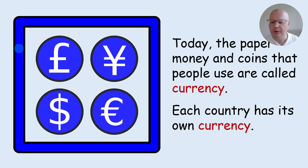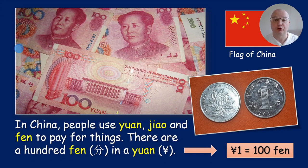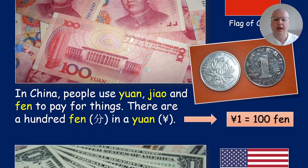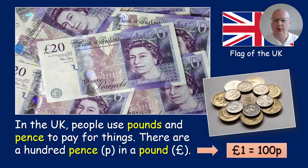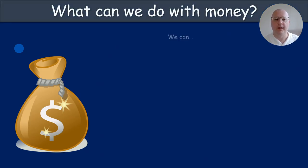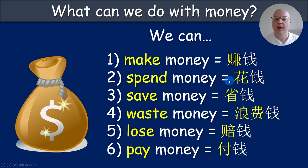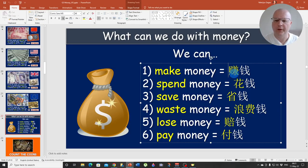Each country has its own currency, and the next four slides illustrate and explain four currencies: China, the US, the UK, and the European Union. Then: what can we do with money? We can make money, spend money, save money, waste money, lose money, or pay money. I have the translations in Chinese for teachers who work in China, but you can very easily change it to your language — just click on the slide and write the translation.